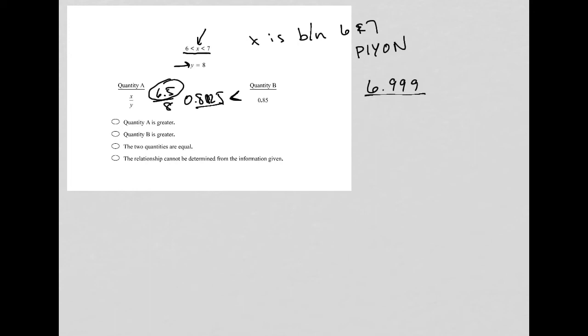So let's see what happens if I use x equals 6.999 divided by 8. And go to my calculator, 6.999 divided by 8 equals 0.8748. So that is larger. So that x value makes it larger.